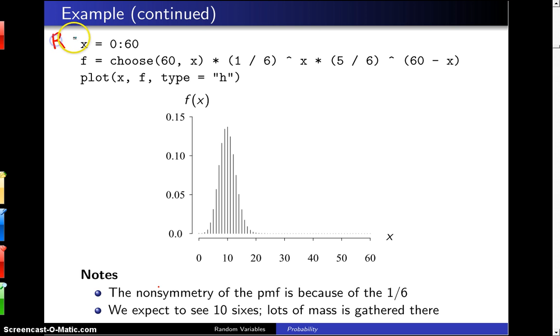On the next page is some R code for plotting this particular probability mass function. It begins by setting the vector X to the integers zero through 60.